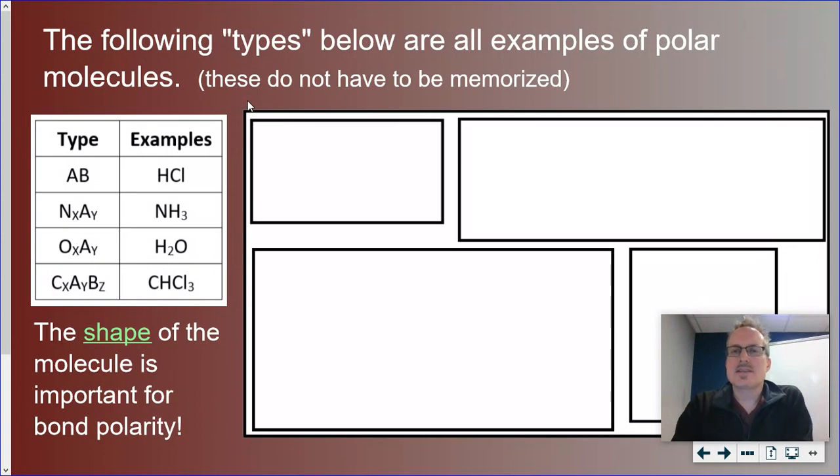Welcome back, Chem20s. This is part two of polarity. What I want to do here is take a look at some examples of those types of compounds that are always polar and those types of compounds that are always non-polar. On the left-hand side of your screen, you will see that we have four types. Those do not have to be memorized.